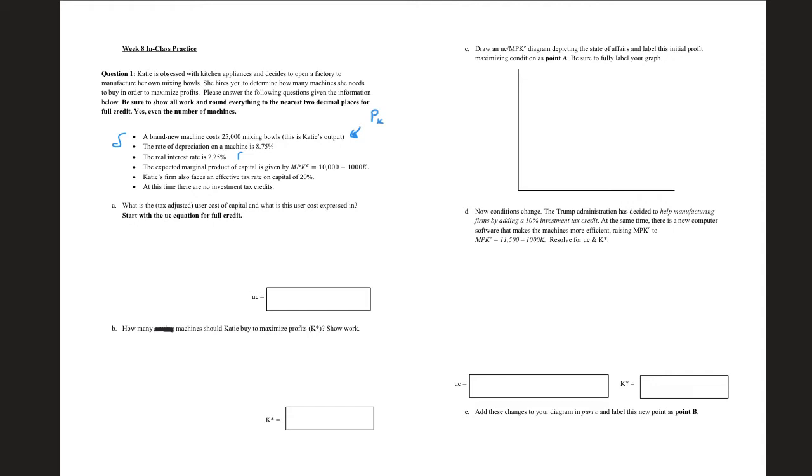We have the marginal product of capital that is expected over here. So that's already stated here as MPKE. The firm faces a tax rate on capital. So this is going to be tau. And then at this time, there's no investment tax credits, which we call ITC. So in our class, those are the different variables and parameters that we would see.